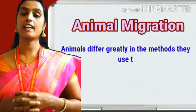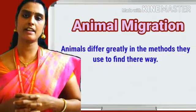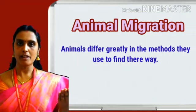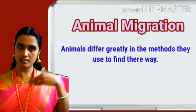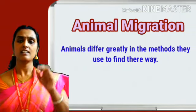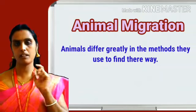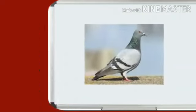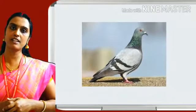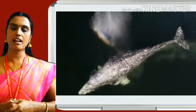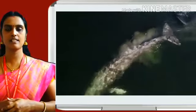Animals also differ greatly in the methods they use to find their way back. For example, pigeons make use of the sense of smell. Some kinds of whales and ducks make use of the sun and the stars to know if they are moving in the correct direction.